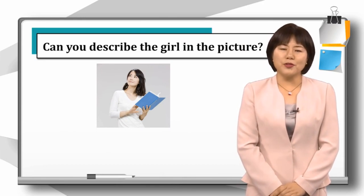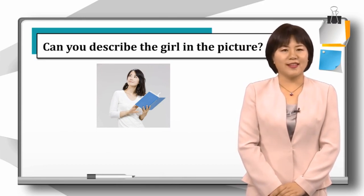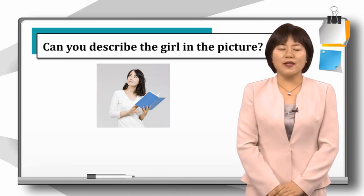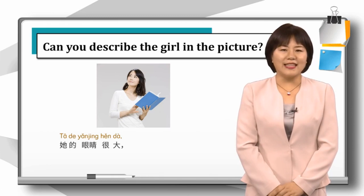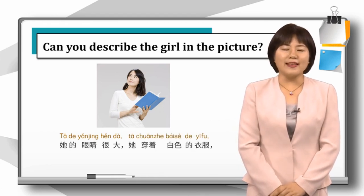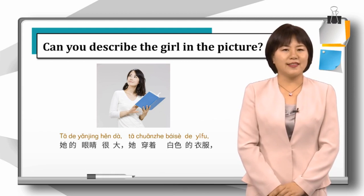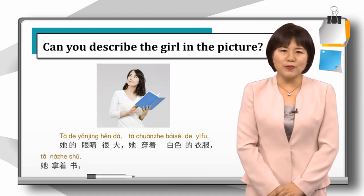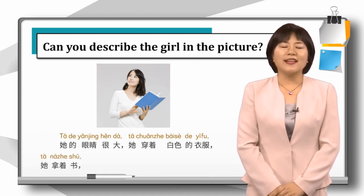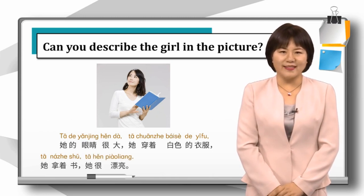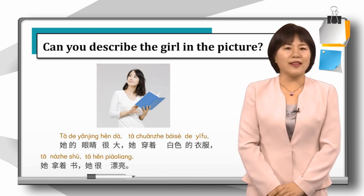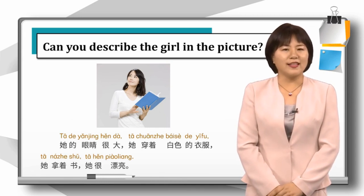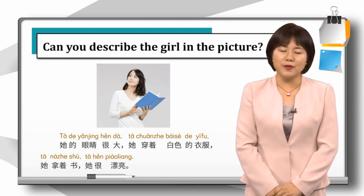First, I want to show you a picture. Can you describe the girl in the picture? 她的眼睛很大。她穿着白色的衣服。她拿着书。她很漂亮。Today we also have a heroine in our dialogue. Do you want to know how she looks like?